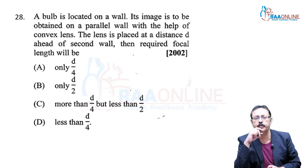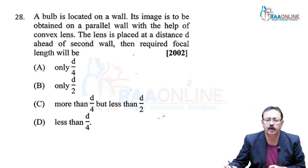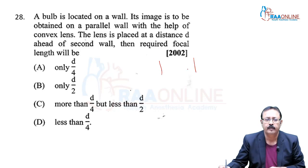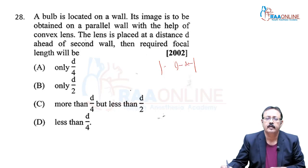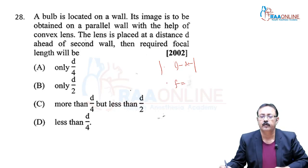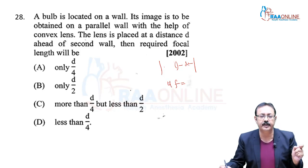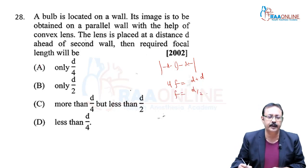28th, from 2002 AIPMT. A bulb is located on a wall and its image is to be obtained on a parallel wall using a convex lens placed at a distance D from the second wall. The required focal length: we know the minimum distance for image formation is 4F. So 4F = D + D, meaning F = 2D/4 = D/2.